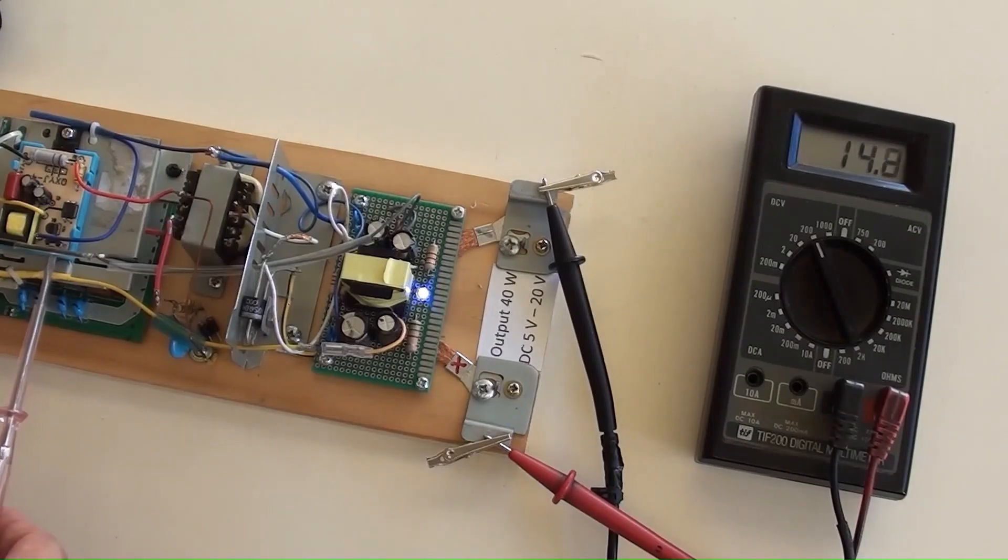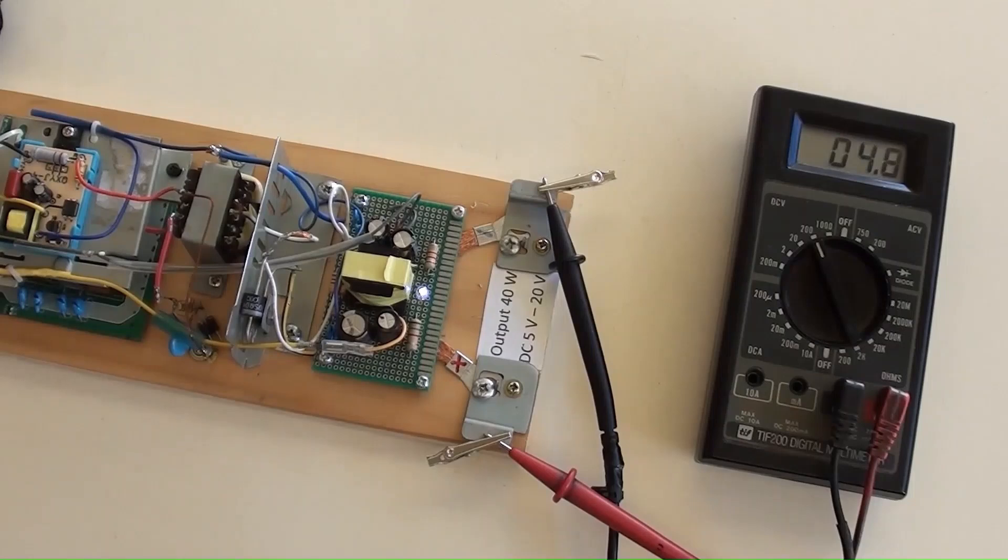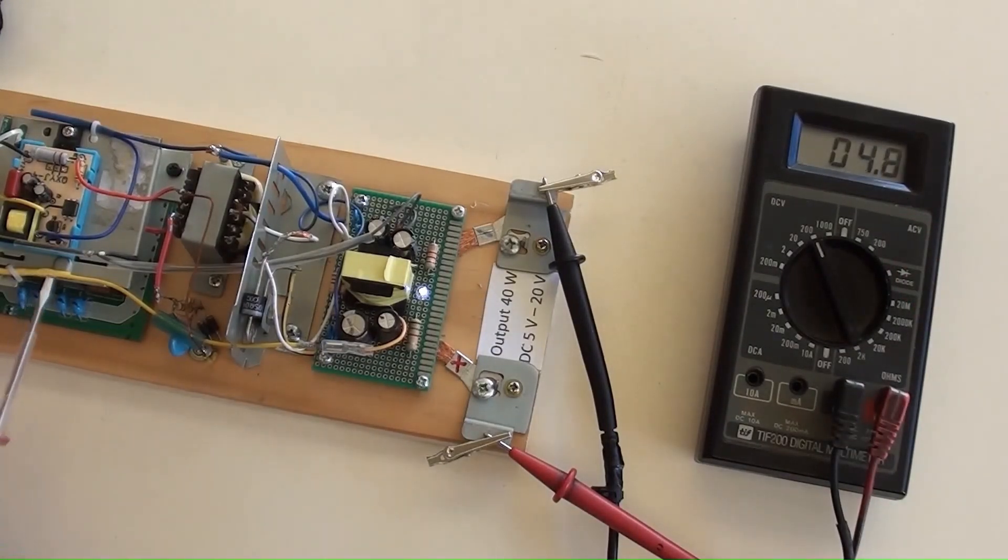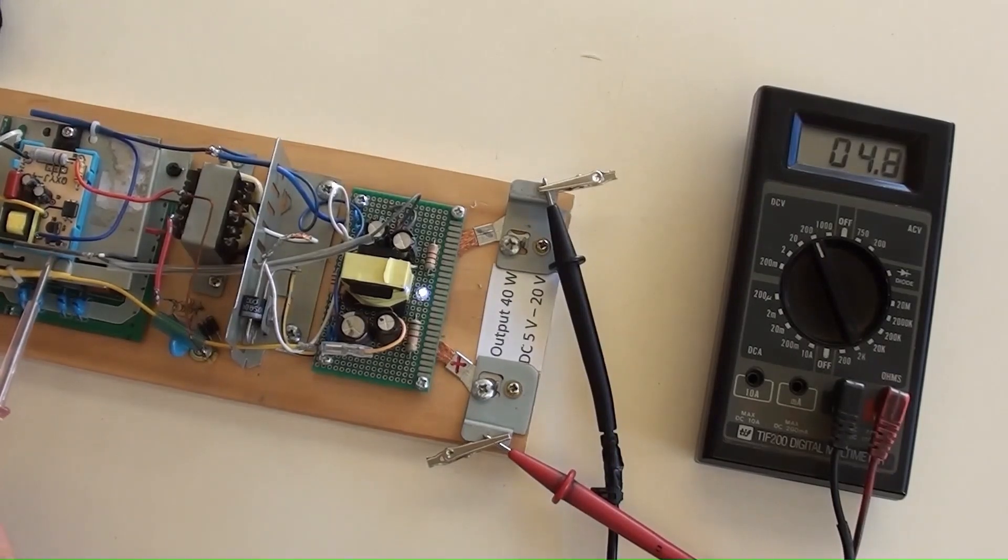By turning the screwdriver anti-clockwise, the output voltage is decreasing. It has reduced to 4.6 volt and stop here. Now adjusting to just over 12 volt, then stop there.